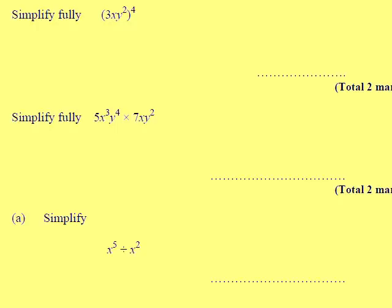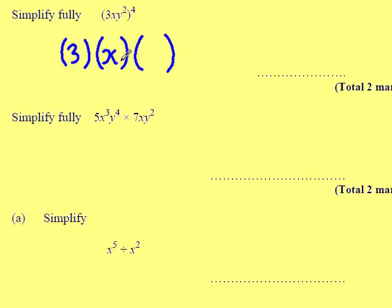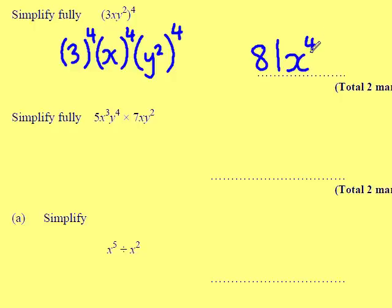Question 5. 3XY squared, all to the power of 4. There are 3 components: a 3, an X, and the Y squared. So I'm going to write them in their separate components. All of those are being raised to the power of 4. 3 to the power of 4 is 3 multiplied by 3 multiplied by 3 multiplied by 3, which is 81. X raised to the power of 4 is just X to the power of 4. Y squared all raised to the power of 4 — I multiply the numbers — giving me Y to the power of 8.